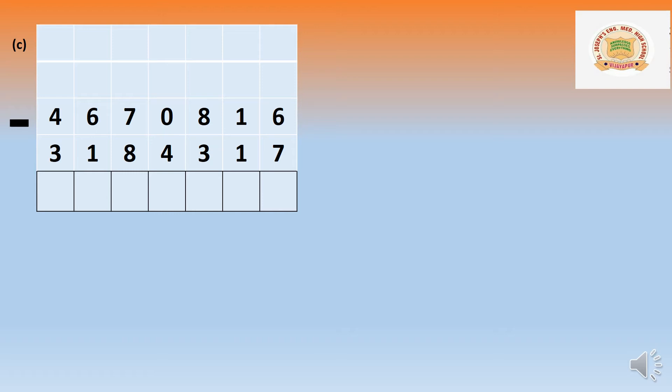In the ones place, 6 cannot minus 7. We borrow from the tens place. The digit 1 in the tens gives 10 to 6, making it 16. Sixteen minus seven equals nine.